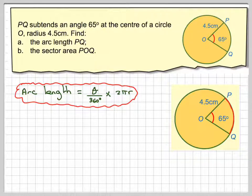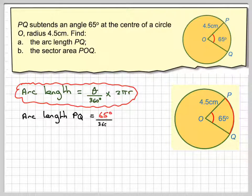So continuing to this example, the arc length PQ will be equal to 65 over 360 times 2π times the radius, which is 4.5.